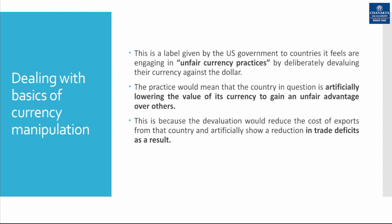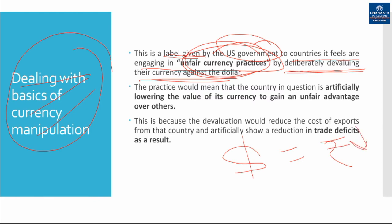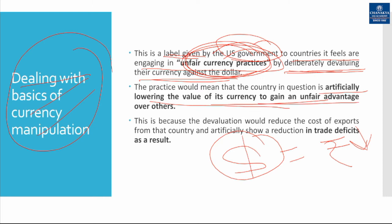Currency manipulation is basically a label given by the US government to countries it feels are engaging in unfair currency practices — specifically, by deliberately devaluating their currency against the dollar. For example, India is said to be devaluing its currency frequently to manipulate the foreign exchange rate with respect to the dollar. This practice means the country is artificially lowering the value of its currency to gain an unfair trade advantage over others.